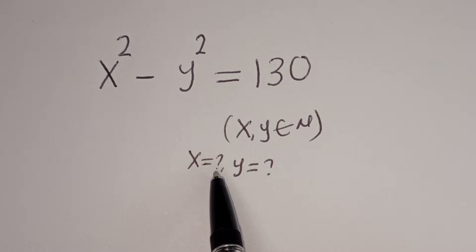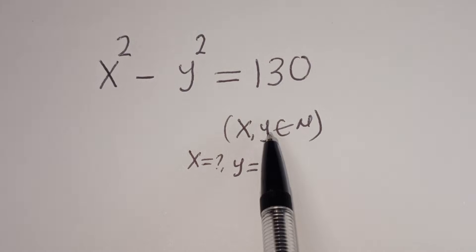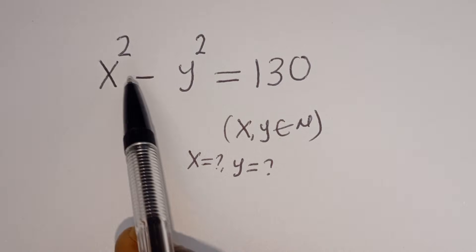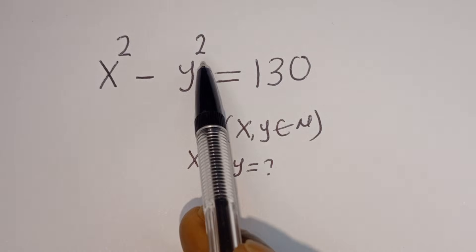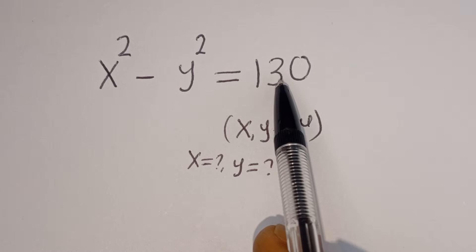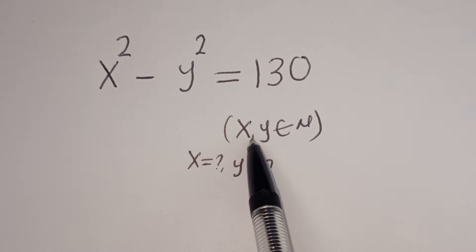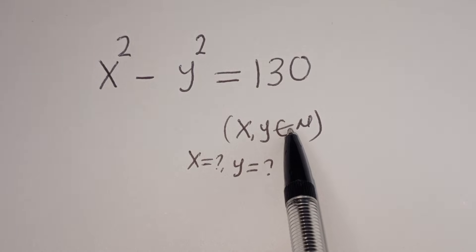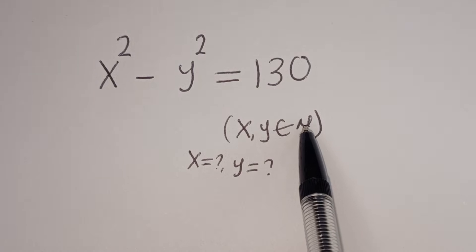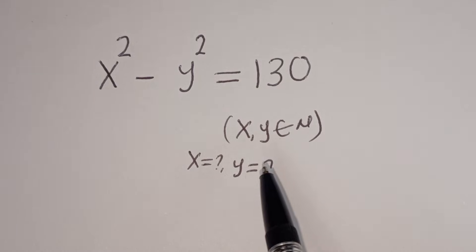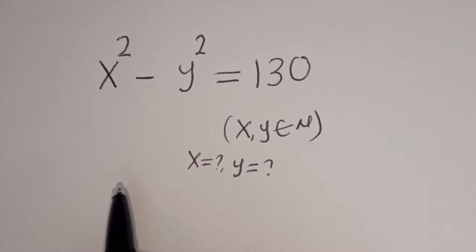Hello. How to solve for X and Y in this equation: X squared minus Y squared is equal to 130, where X and Y are members of the natural numbers.